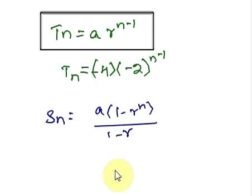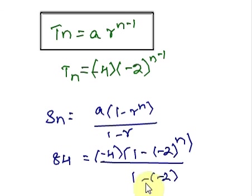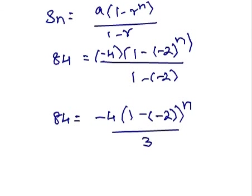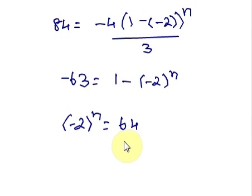We are given that Sn equals 84. Plug in A and R values into the sum formula. Simplify the denominator: 1 plus 2 equals 3. Cross-multiplying gives us negative 4 over 3. Multiply both sides by negative 3 over 4. Shift terms to the left side and add 63 to both sides of the equation. Now we use the law of indices: when bases are the same, we can equate the exponents.